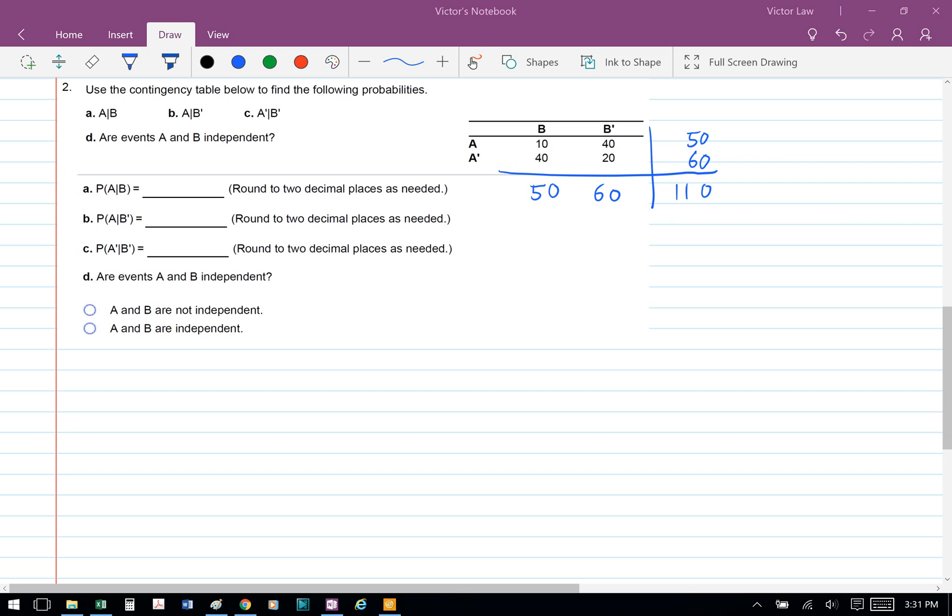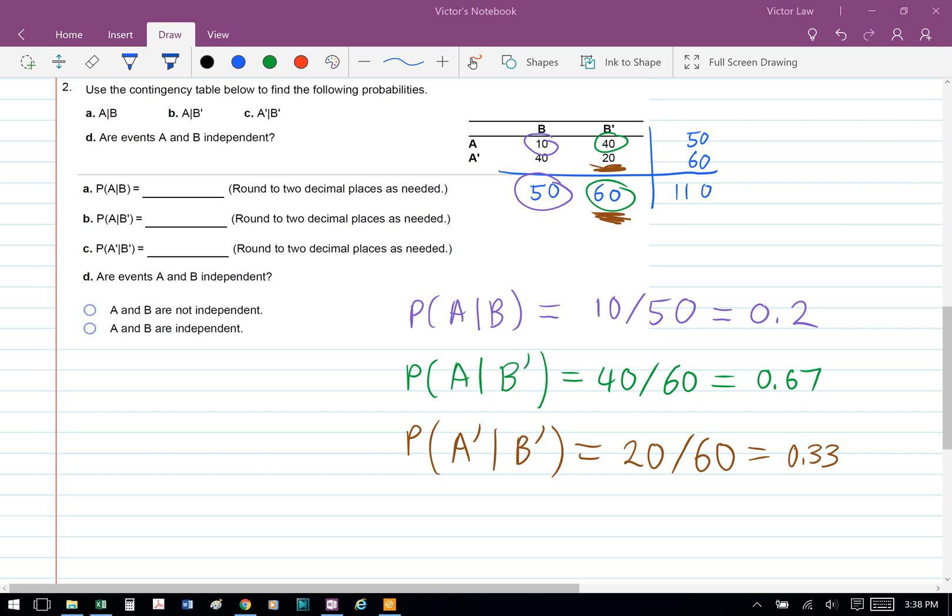The total for the whole contingency table is 110. For part A, we're asked to find the probability of A conditioned on B, so now we're only looking at column B. In column B, A occurred 10 times and there are 50 B events. So the probability of A given B is 10 divided by 50, which equals 0.2.